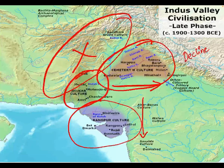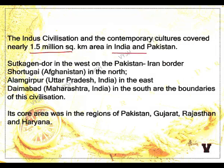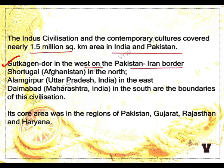There are many reasons behind the decline, which we will see in coming slides. The Indus civilization covered almost 1.5 million square kilometers in India and Pakistan. Suktagan Dor is the westernmost part on the Pakistan-Iran border. Shortugai in Afghanistan is the northernmost part. Alamgirpur in Uttar Pradesh is the easternmost part, and Daimabad in Maharashtra is the southernmost part. The major portion was in Pakistan, Gujarat, Rajasthan, and Haryana.